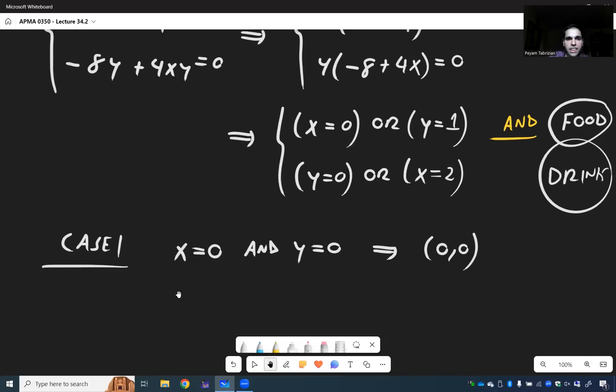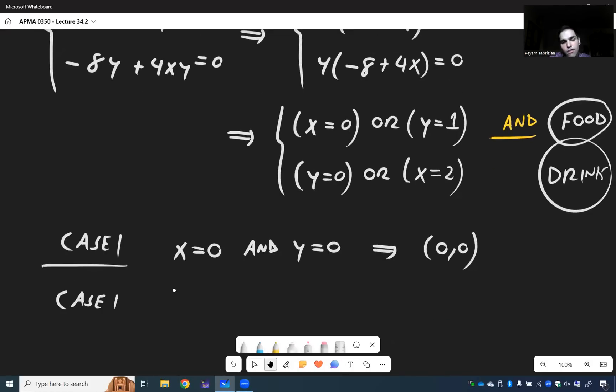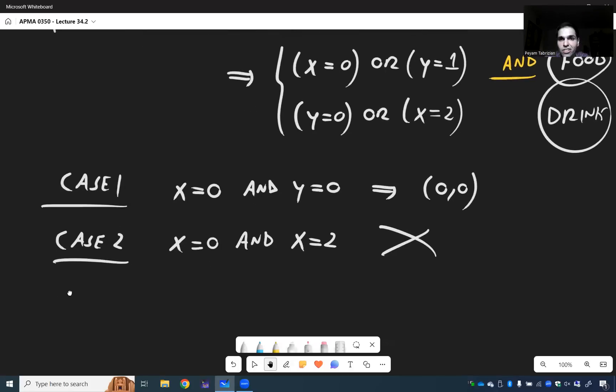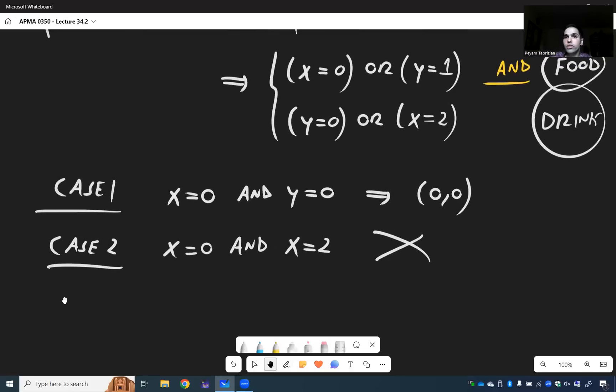The second thing would be, again, food 1 and drink 2. x equals 0 and x equals 2. But that wouldn't really work. We can't multitrack drift. Because x cannot be both 0 and 2. So this would not give you any equilibrium points.